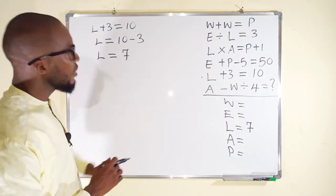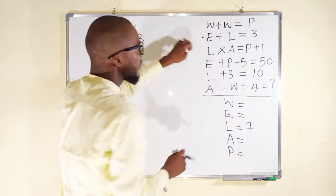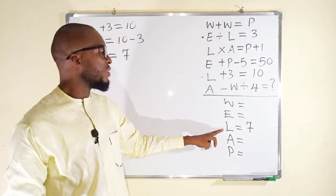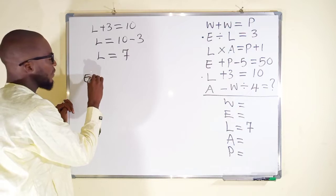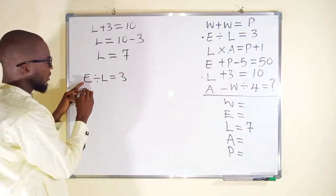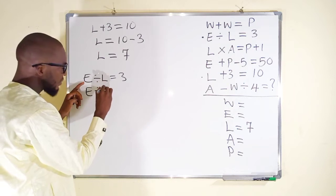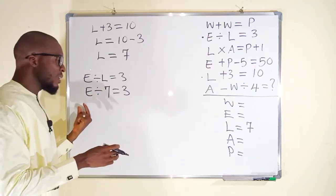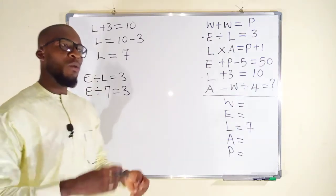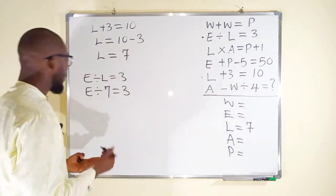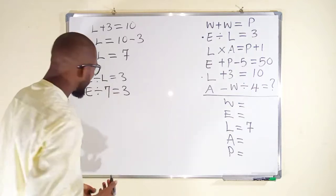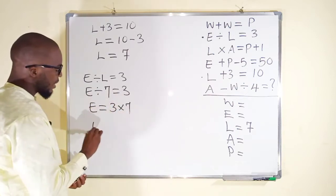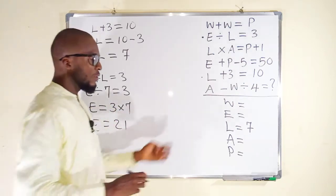Let us see which other equation. We can use this equation right here. You can see E divided by L is equal to 3 because already we have our L value, which is equal to 7. So from that equation, E divided by L is equal to 3. E divided by 7 is equal to 3. This means that if 7 is dividing, if you take it to the right, it will multiply. When a term crosses equality sign, it will do the opposite. The operation here is division. The opposite of division is multiplication. Finally, you can see that E is equal to 3 multiplied by 7 and E is equal to 21. So you can see E is 21.